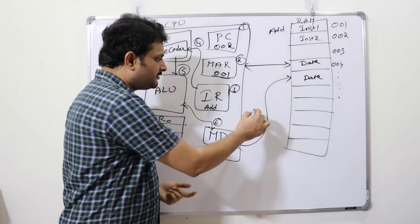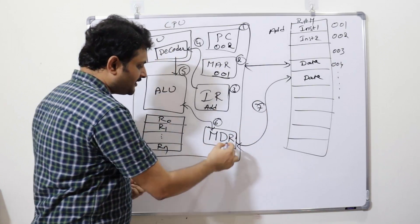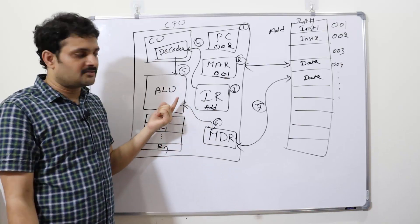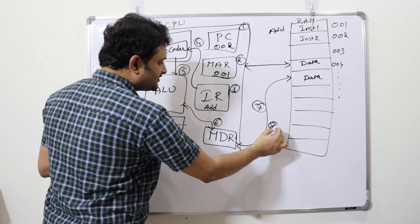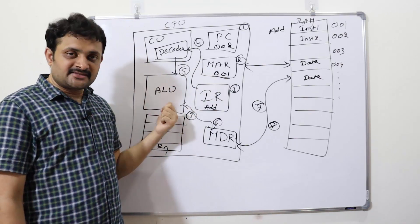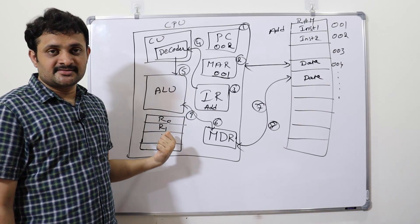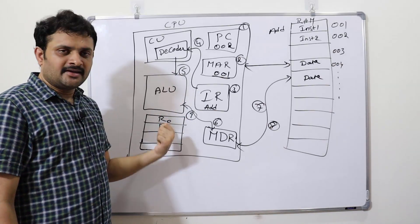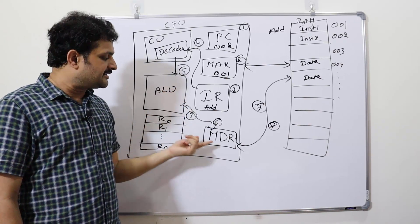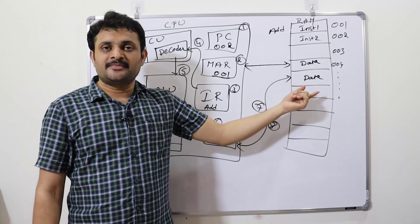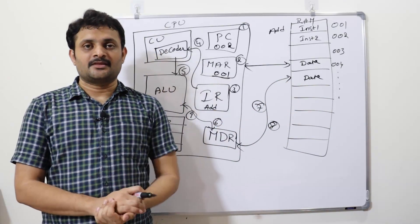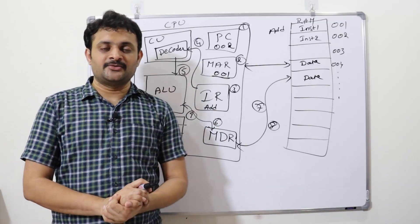The MDR fetches the required data and sends it back to the ALU. The ALU uses general purpose registers (R0, R1, R2, etc.) for internal calculations. Once the ALU performs the operation, the result is sent back to the MDR, and the MDR stores it back to memory if required. That is the basic operational flow of a computer.